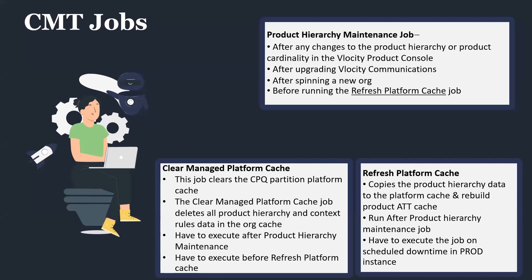We have a product hierarchy maintenance job, a clear managed platform cache, and refresh platform cache. The product hierarchy maintenance job has to be run whenever there is a change in the product or product bundle, or when you have created a new product and configured pricing for it. It is necessary to execute the product hierarchy maintenance job. Whenever a package upgrade happens on the org, this job is necessary to be executed.